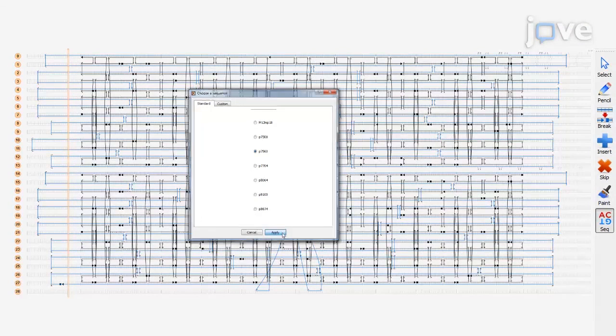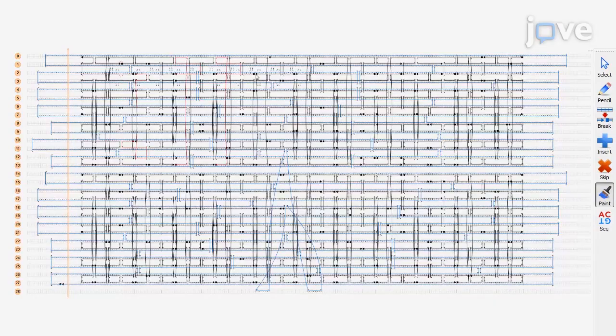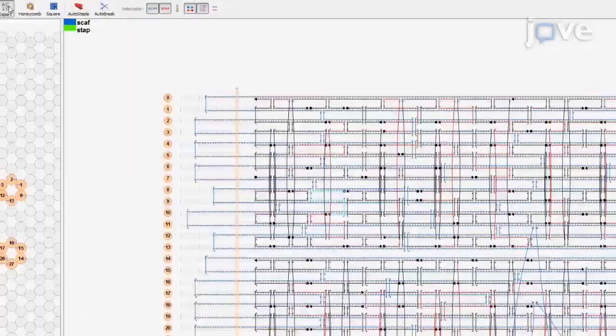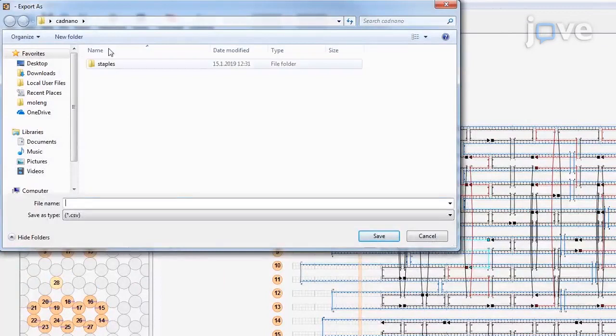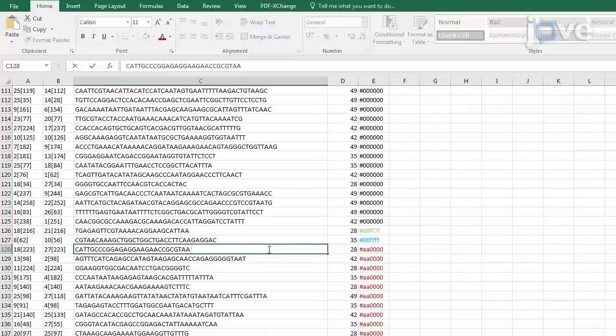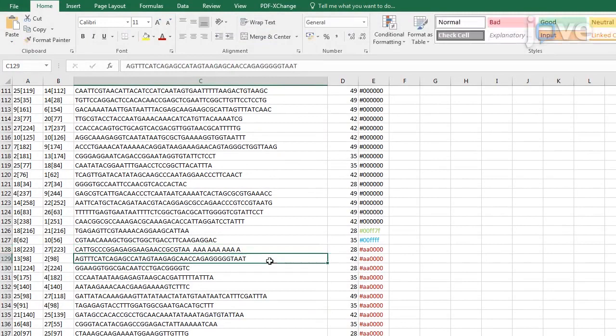Click Paint tool and mark the staple strands that require further modification. Click Export tool to export the DNA staple sequences to a CSV file. Then import the CSV file into a spreadsheet application.